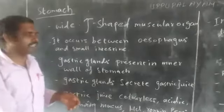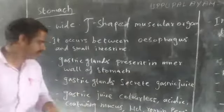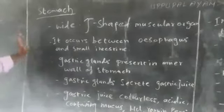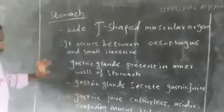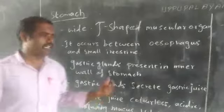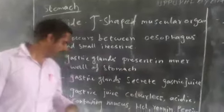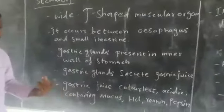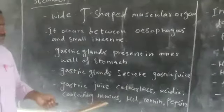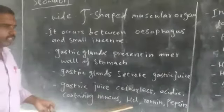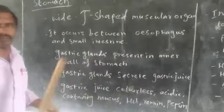Gastric glands secrete the gastric juice. The gastric juice is colorless and acidic in nature, and it contains mucus, hydrochloric acid, renin, and pepsin.